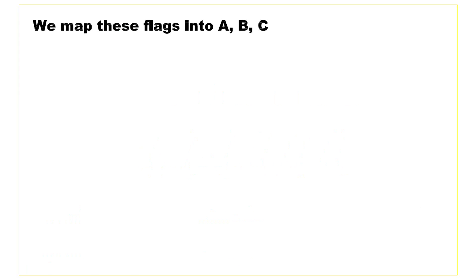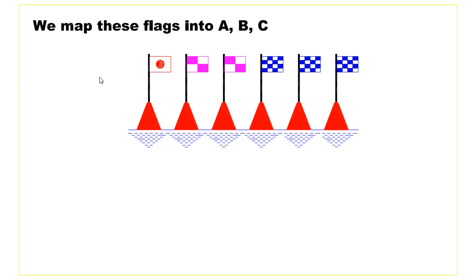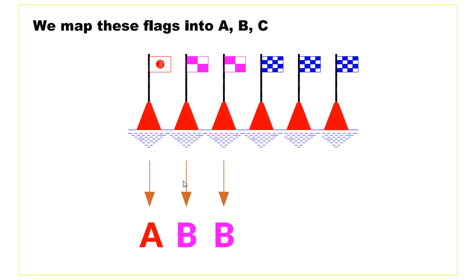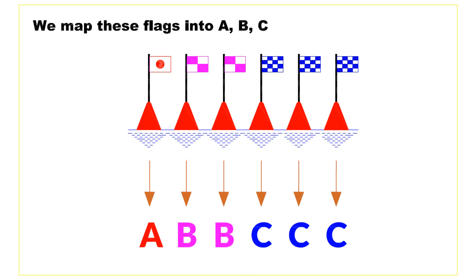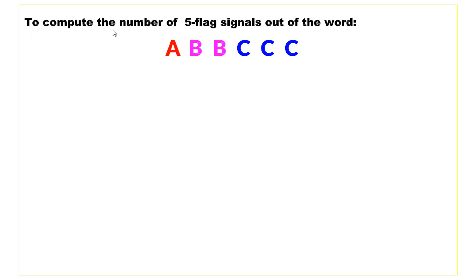First, we map the six flags into alphabetical letters. The first flag is unique, so we map it to letter A. We have two identical flags, mapped to B and B. And we have three identical flags mapped to C, C, C. So we have the sequence A, B, B, C, C, C.